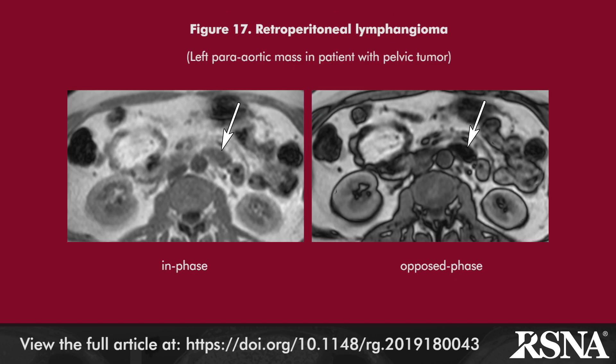The use of chemical shift MR imaging as an adjunctive imaging feature can help in the diagnosis of pulmonary hematomas lacking calcification or fat on CT, and in the diagnosis of lipid-containing chylous fluid collections and lymphangiomas in the chest and abdomen.